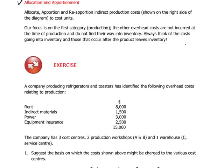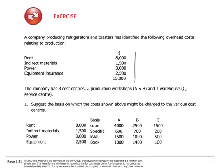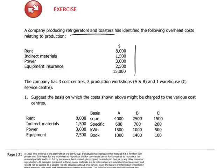The best way to appreciate this is to look at a concrete case with some numbers. If we imagine a company involved in producing white goods — fridges and toasters — with total overhead costs amounting to $15,000, and the breakdown is between rent, indirect materials, power, and equipment insurance, we can see at first glance that it's not immediately obvious how the rent, for example, would be split up between toasters and refrigerators.